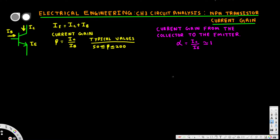In this video we are going to see how to derive the equation for the current gain. The basic equations are: emitter current is equal to collector current plus base current, and the equation for current gain beta is given by IC over IB.